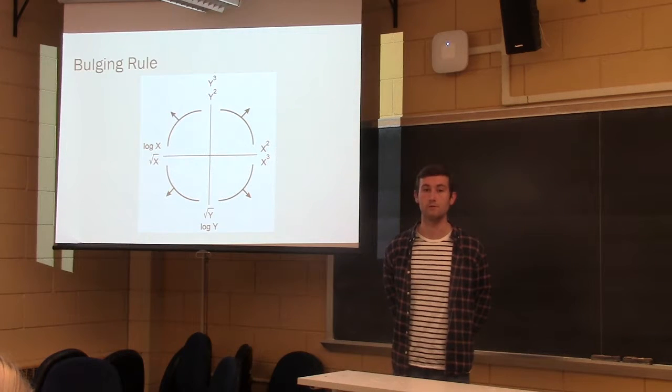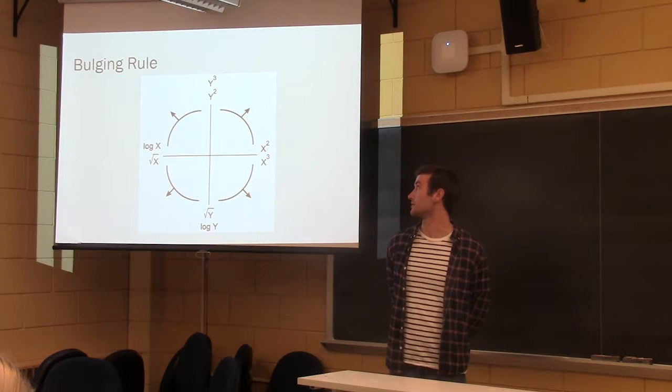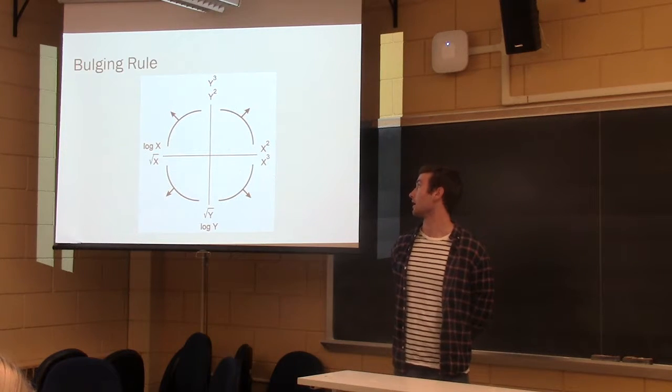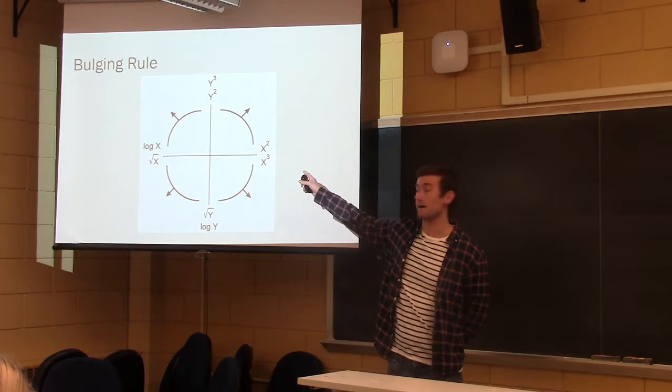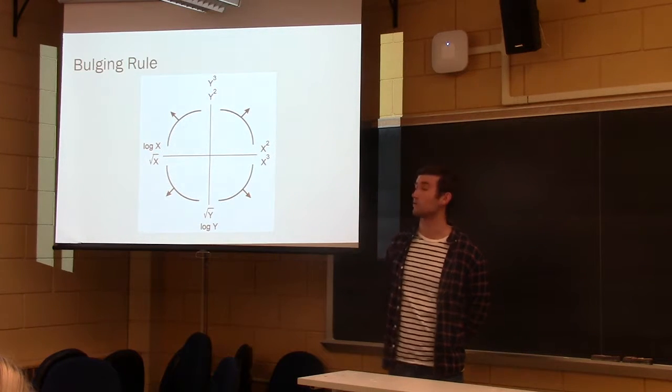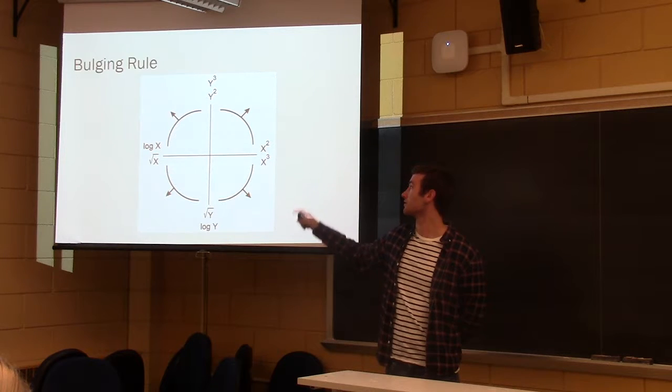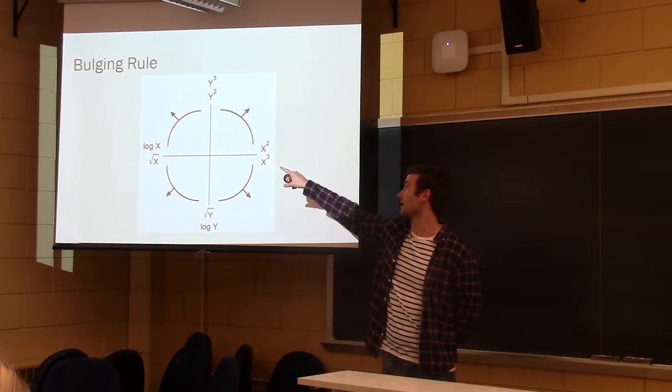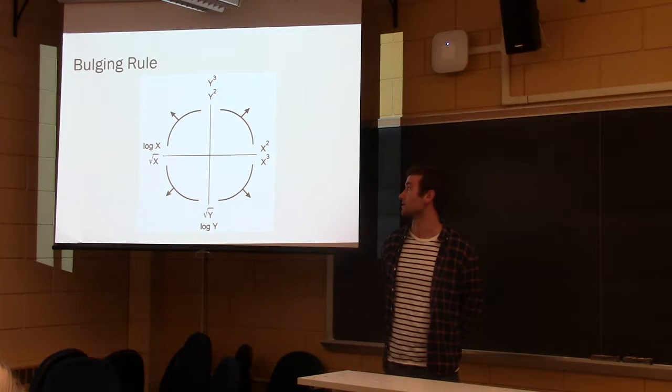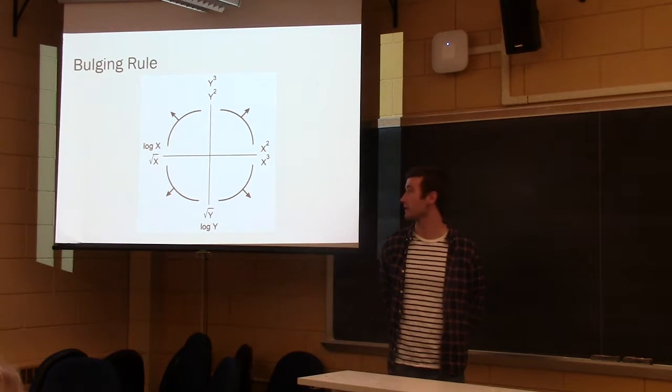And to take care of that, we use Bulging Rule. So if the distribution looks something like that, curved down and downward, you either take X squared or X cubed, or you take Y inverse squared or cubed. And then the same for each one of these. So if it's bent down like that in the top right corner, you either take Y cubed or Y squared, or the log of X or the square root of X.